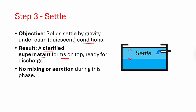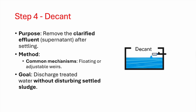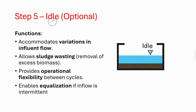In the decant phase, the clarified effluent is removed after settling using a floating or adjustable weir decanter. The goal is to discharge the treated water without disturbing the settled sludge. The clear water is then moved calmly to tertiary treatment — chlorination.